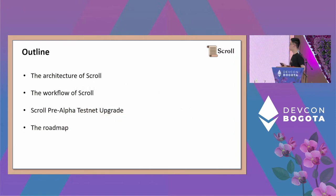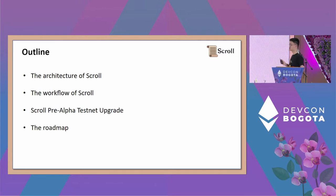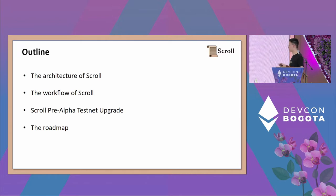In the rest of the talk, it will be divided into two parts. In the first half, I will talk about the architecture of Scroll and how your transaction is processed on Scroll. In the second half, I will talk about our important upgrade for our testnet and the roadmap going forward.